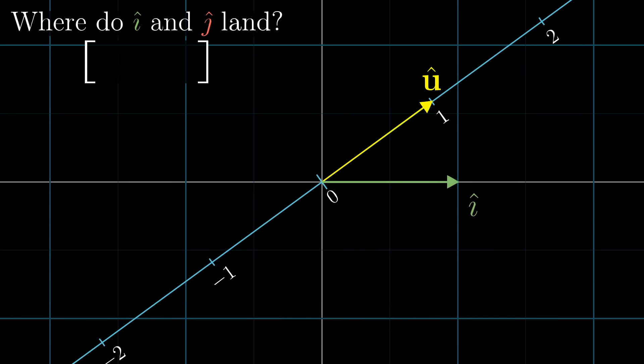This part's super cool. We can reason through it with a really elegant piece of symmetry. Since i-hat and u-hat are both unit vectors, projecting i-hat onto the line passing through u-hat looks totally symmetric to projecting u-hat onto the x-axis. So when we ask what number does i-hat land on when it gets projected, the answer's going to be the same as whatever u-hat lands on when it's projected onto the x-axis. But projecting u-hat onto the x-axis just means taking the x-coordinate of u-hat. So by symmetry, the number where i-hat lands when it's projected onto that diagonal number line is going to be the x-coordinate of u-hat. Isn't that cool?